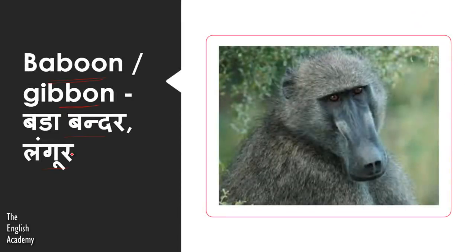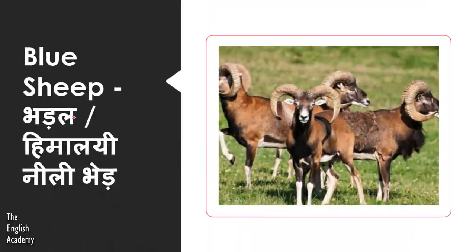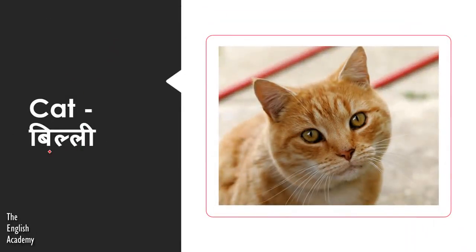Bada Bandar ya Langgoot is called Baboon or Gibbon. Then there is Bhadal, which is also called Himalayan Blue Sheep — in English it is called Blue Sheep. Next we have Billy, which we know by the name Cat.